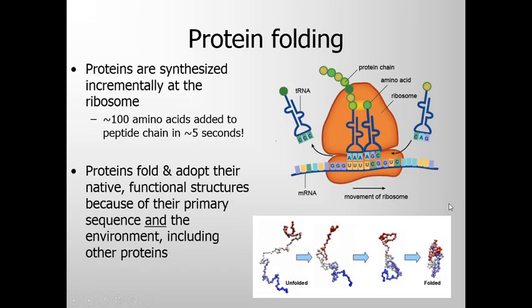In living cells, proteins are assembled from amino acids and synthesized incrementally at the ribosome. For example, E. coli cells can make a complete biologically active protein molecule containing 100 amino acids in about 5 seconds at 37 degrees centigrade.